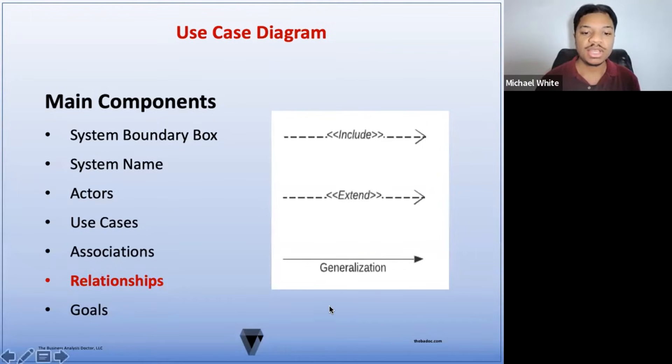The next relationship we have is generalization. This is the relationship between two use cases when a child use case inherits the functionality of the parent use case. The child use case is also more specialized and includes specific functionality. This is used when two or more use cases have common behavior.